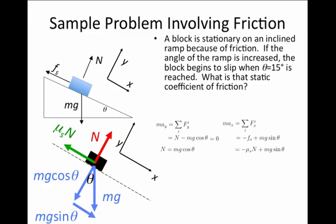We would like now to use that expression for the normal force injected into this expression. And so we have that the total force here is minus mu s mg cosine theta plus mg sine theta. And that equals mass times acceleration in the x direction.